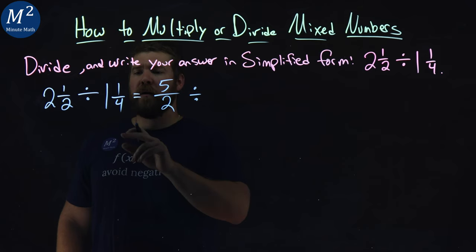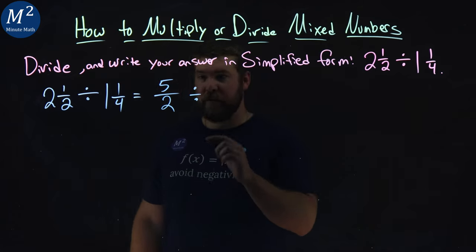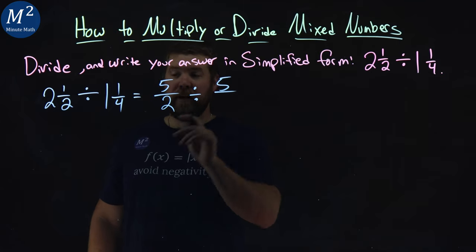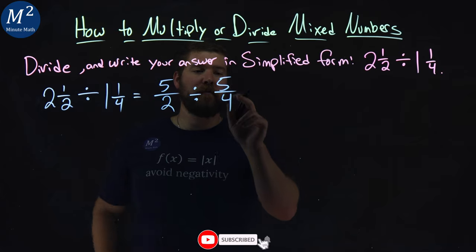Divided by, same thing here. Four times one is four, plus one is five. Five, keep the denominator, four. So one and one fourth is equal to five fourths.